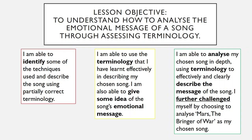So, for example, dynamics are quiet, and this means it could be sad or intimate. The red box on the left — at the very least, there you should be able to identify some of the techniques used and describe the song using partially correct terminology. You identify some of the techniques used and you're starting to use them kind of correctly to describe the song, but there's a bit of misconception there, so make sure you keep an eye on how you're describing the song.